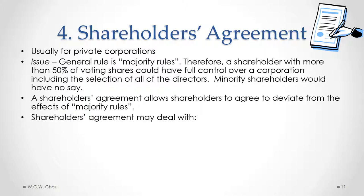A shareholders agreement may deal with a number of different things, including the voting rights of shareholders and how the directors are selected. For example, if we have a 60% shareholder and a 40% shareholder, without a shareholders agreement dealing with the selection of directors, the 60% shareholder would have — because of the majority rules rule — the right to select all of the directors. But with a shareholders agreement, we can have a more fair allocation of the selection of directors between the majority shareholder and the minority shareholder.